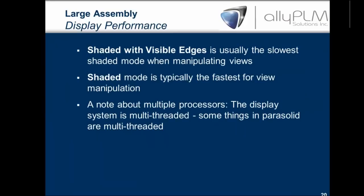Most of us use shaded with visible edges because it looks the nicest, but it's actually the slowest when manipulating views. Shaded mode is the fastest, so you want to use that. On multiple processors: we always get questions whether Solid Edge supports multiple processors. The hi-align display mode does support multiple processors, and some things in Parasolid are multi-threaded. However, CAD is very serial in nature, and trying to make it all multi-processor actually slows things down because the system is constantly playing traffic cop. If you look at other systems like AutoCAD, multi-processor support is display system only — and that's typical for almost every CAD system.